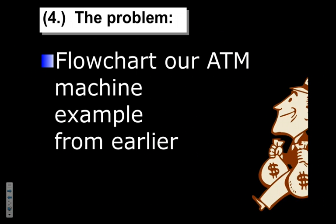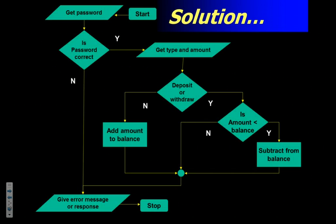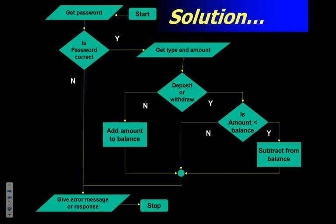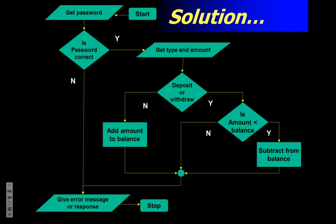Let's try the ATM machine example. At an ATM you enter a PIN number. If you get it wrong, it shows an error message and you're done. If correct, you enter whether you're doing a deposit or withdrawal and how much. If it's a deposit, add it to the balance. If it's a withdrawal, check: do you have enough money? If yes, subtract from balance. If no, error message. This example gets more complicated but gives a visual of what's going on. I also used the optional circle symbol here just to clean things up a bit.